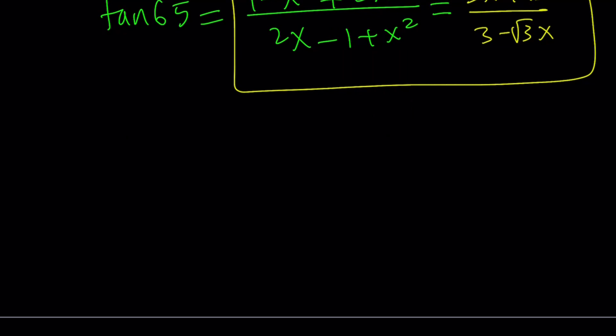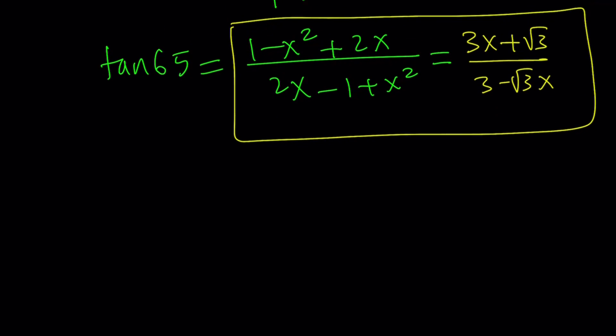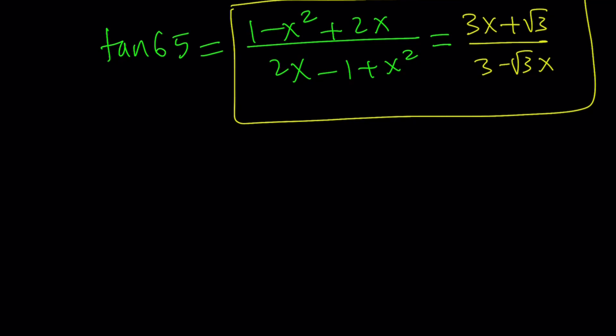Why did we get two different answers for tangent 65? Even though they're both in terms of x, they are different values. So, let's say you are taking a test, and both of these are, no, it's not going to happen. Okay. But, both of these are valid answers. Let's see why this works.